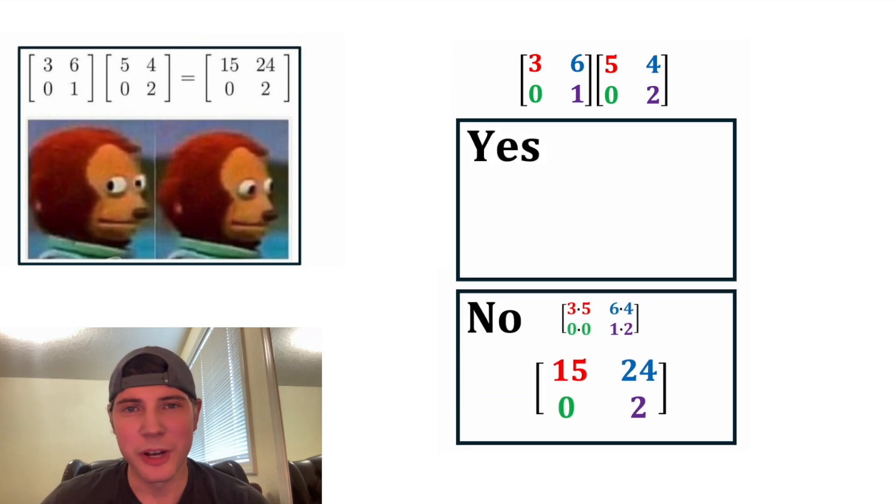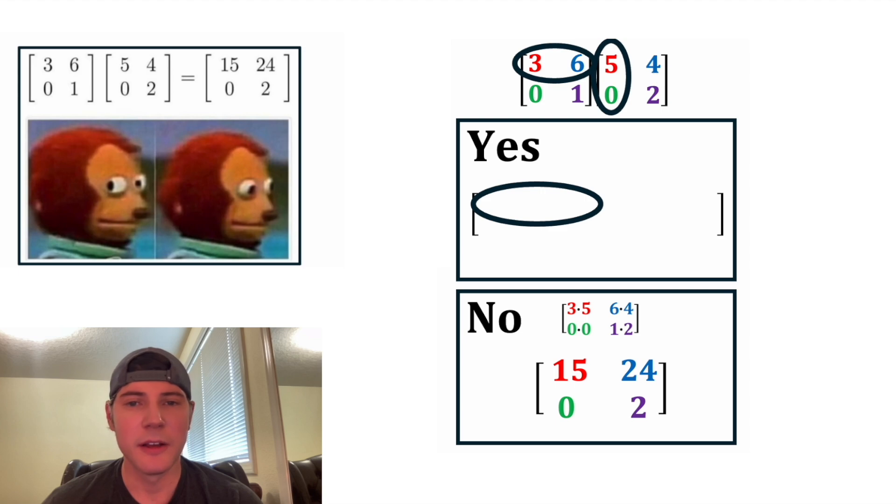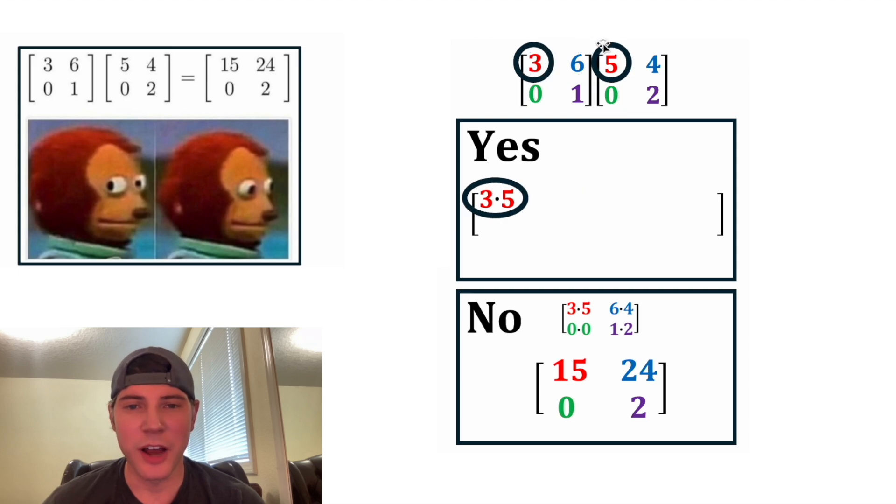Let's go over the correct way to do it. So for this location, which is the first row and the first column, we're going to take the first row from here and the first column from here. We're going to do 3 times 5 plus 6 times 0.